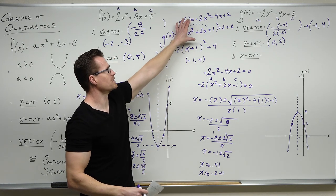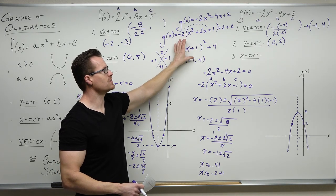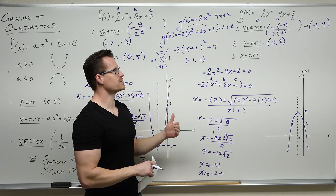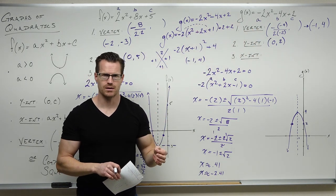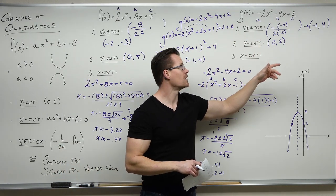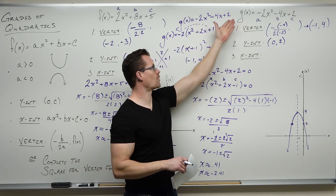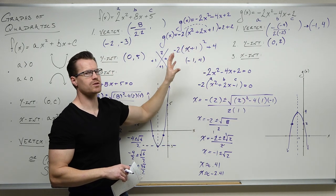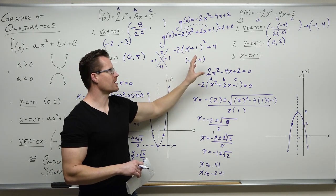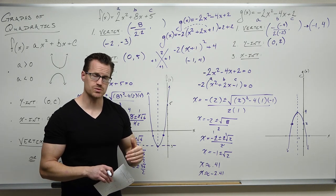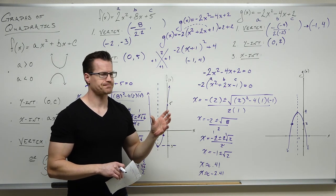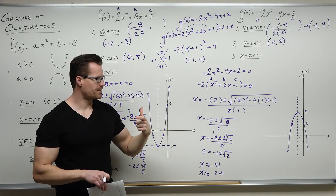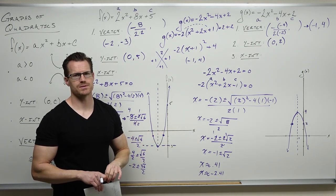Whether you're using the vertex formula or completing the square, you're finding the same thing. Completing the square gives the vertex. The vertex formula gives the vertex. Plugging in 0 gives the y-intercept as 2 either way. For x-intercepts, the standard approach with quadratic formula is generally easier. On the next examples, we're not going to go through the full vertex form — this is only if you need it or want to practice it.